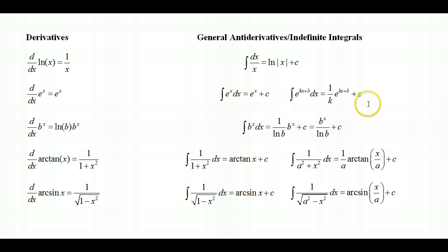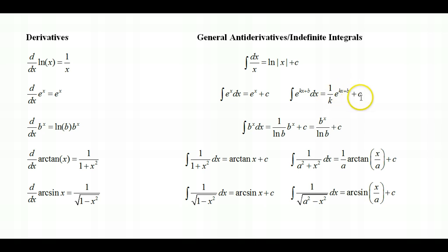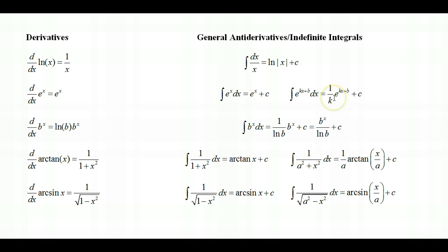We had this modification shown early on: the integral of e to the kx plus b, dx, equals 1 over k times e to the kx plus b, plus c. This is a rule we memorized early on, but it actually comes from a u-substitution. We can use u equals kx plus b to arrive at the 1 over k constant in the front.